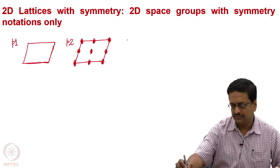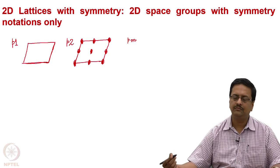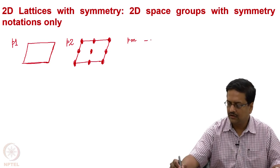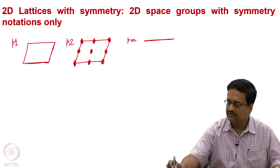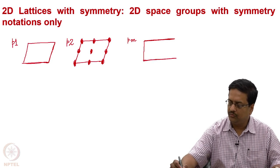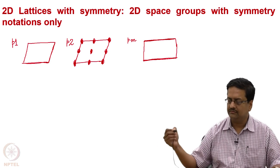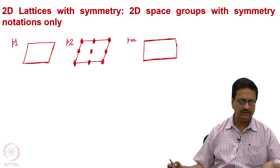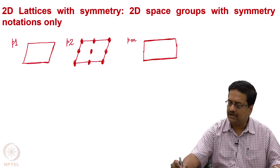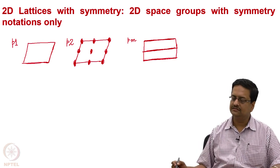The third one is Pm. Pm indicates that it has a mirror plane and a transverse mirror plane along the edge. I am drawing a rectangular lattice with the bold line on two sides — up and down — and the two vertical sides are non-bold. These two bold sides are mirror planes, and as we have seen in the previous lecture, because of these two parallel mirrors, a third mirror is generated in the middle portion of this unit cell.